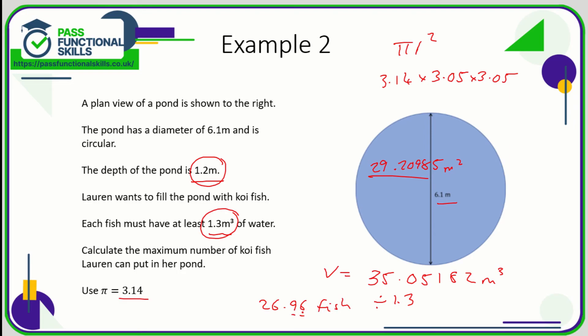This number is closer to 27, but 27 would mean that there's too many fish. 26.96 is the exact number of fish, so we're going to have to round it down. Well, we're not rounding it down; we just need to move this down to 26 fish as the maximum number of koi fish that Lauren can put in her pond.